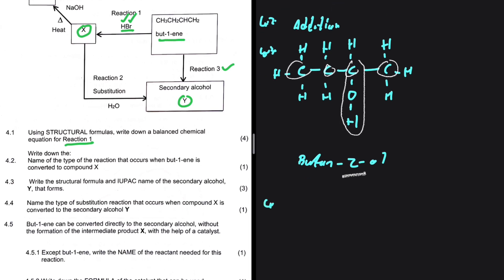Let's do 4.4. Name the type of substitution reaction that occurs when compound X is converted to the secondary alcohol Y. So there is only one substitution reaction that can give you an alcohol. It is hydrolysis. There is no other substitution reaction that leads to the formation of alcohol. So without thinking very hard, we know that the answer is hydrolysis. If your alcohol is formed through a substitution reaction, it is hydrolysis. If it is formed through an addition reaction, it is hydration.